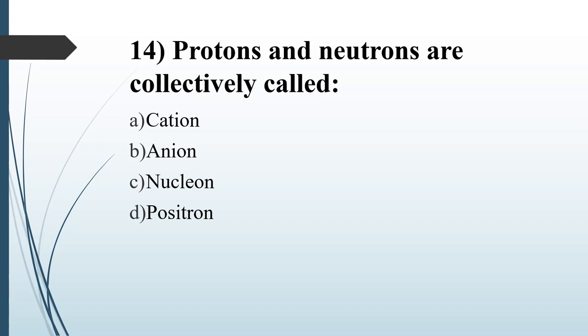Fourteenth question. Protons and neutrons are collectively called. Option A: Cation. Option B: Anion. Option C: Nucleon. Option D: Positron. Answer is Option C: Nucleon.